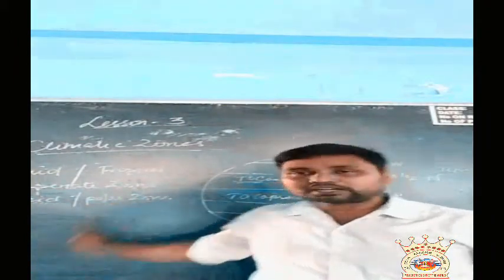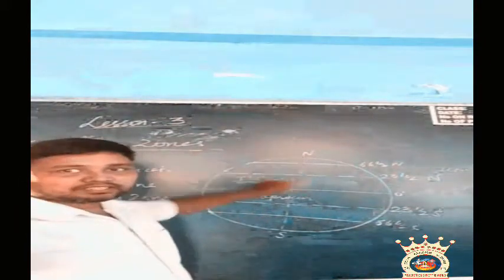Torrid zone is also called as tropical zone. Frigid zone is called as polar zone, since frigid zone is found in the polar region, it is called as polar zone.